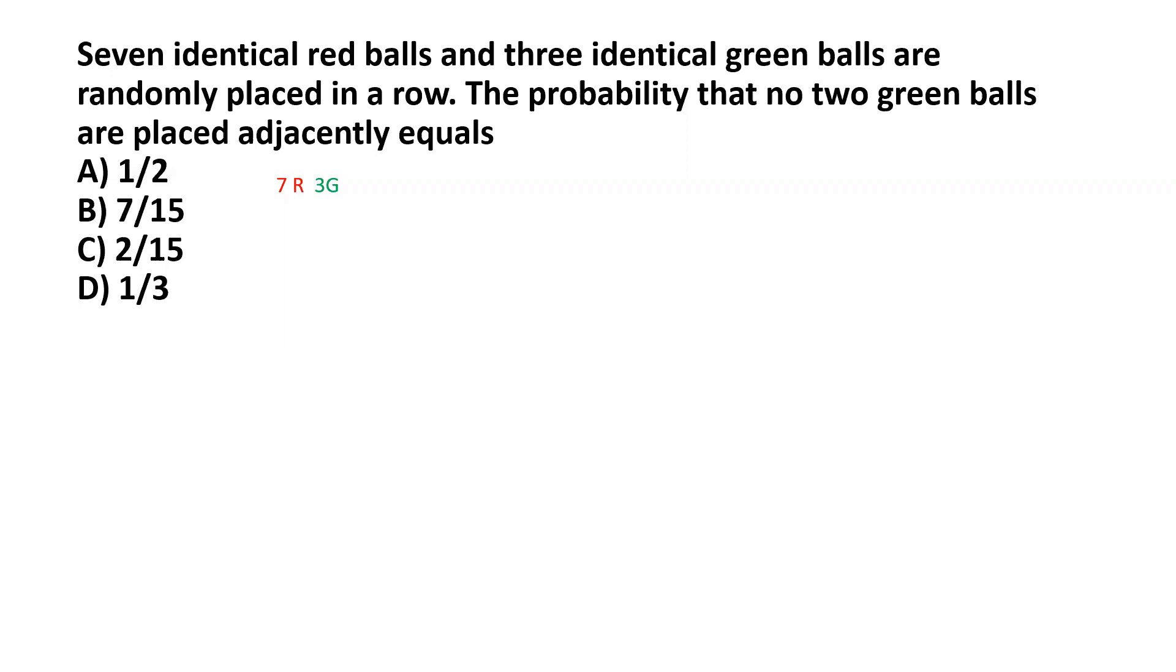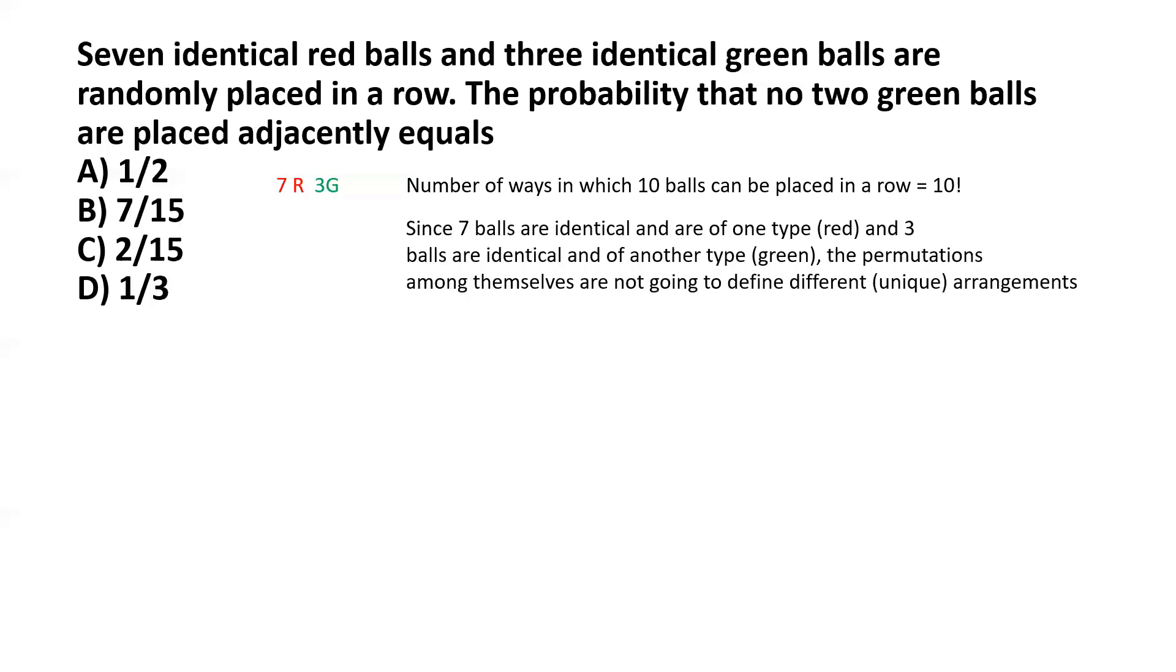If we have ten balls, the number of ways in which those ten balls can be placed in a row is simply factorial ten. But here, we are given that seven balls are identical or are of one type (red), and three balls are identical and of another type (green). So the permutations amongst themselves, meaning those seven balls which are identical and red, and those three balls which are identical and green, are not going to define different or unique arrangements.